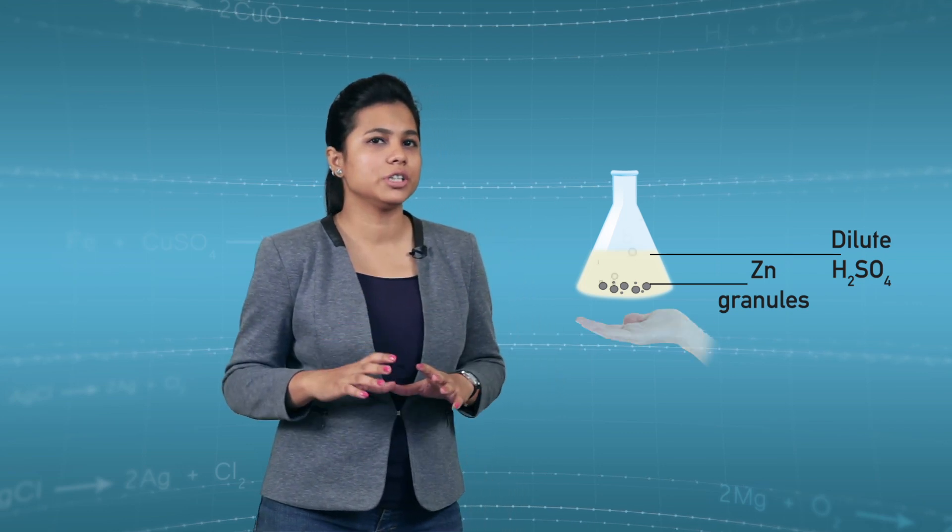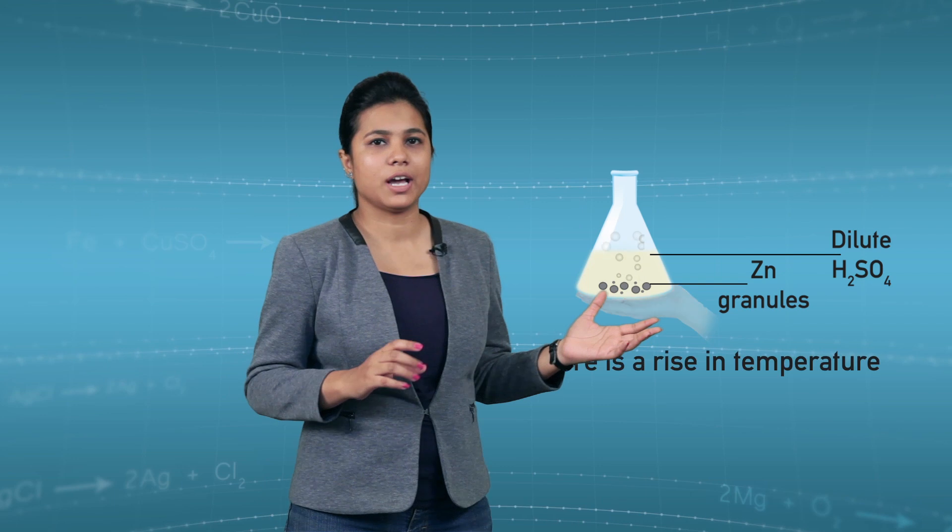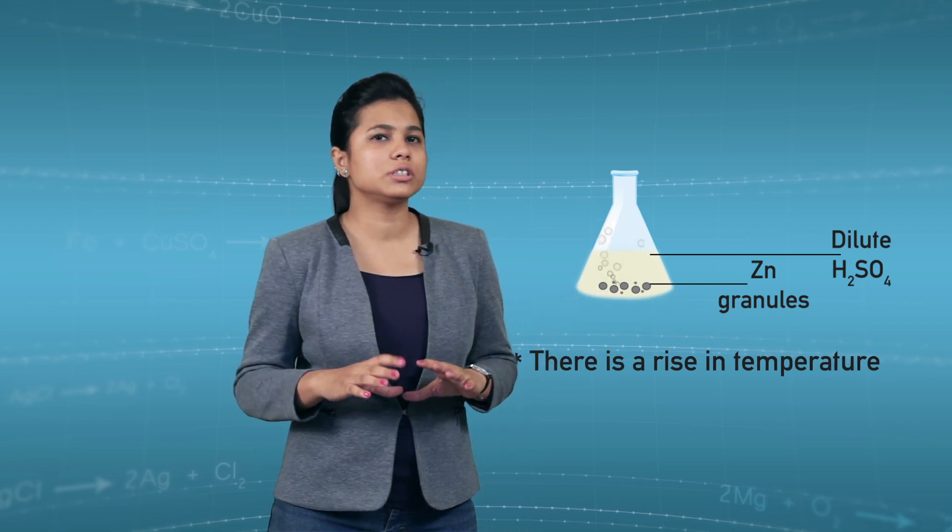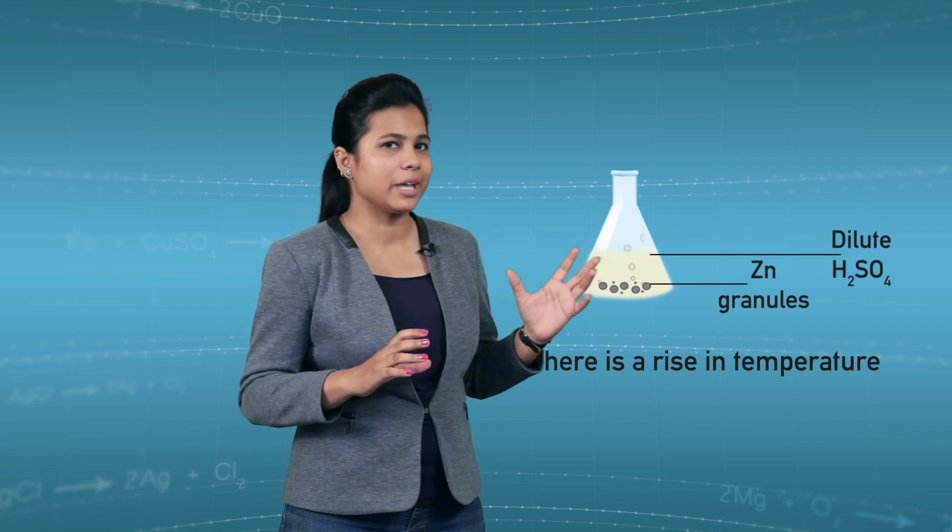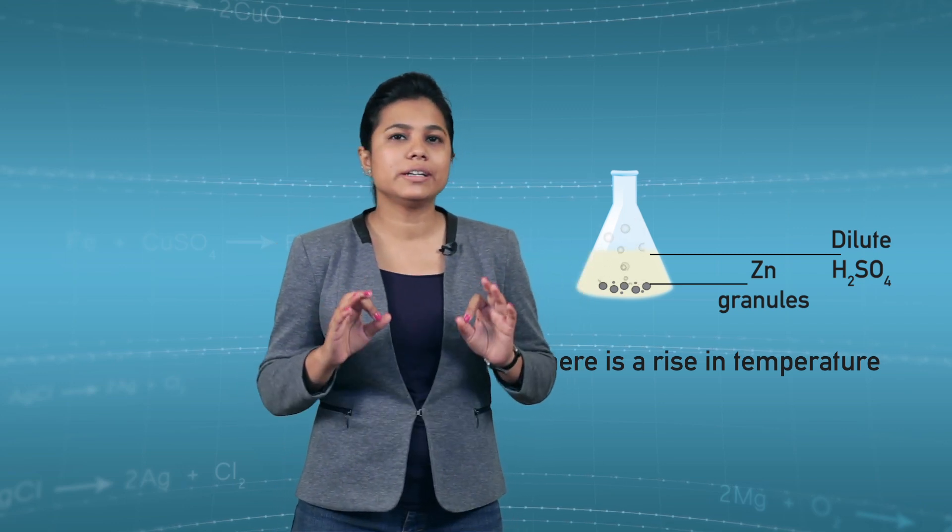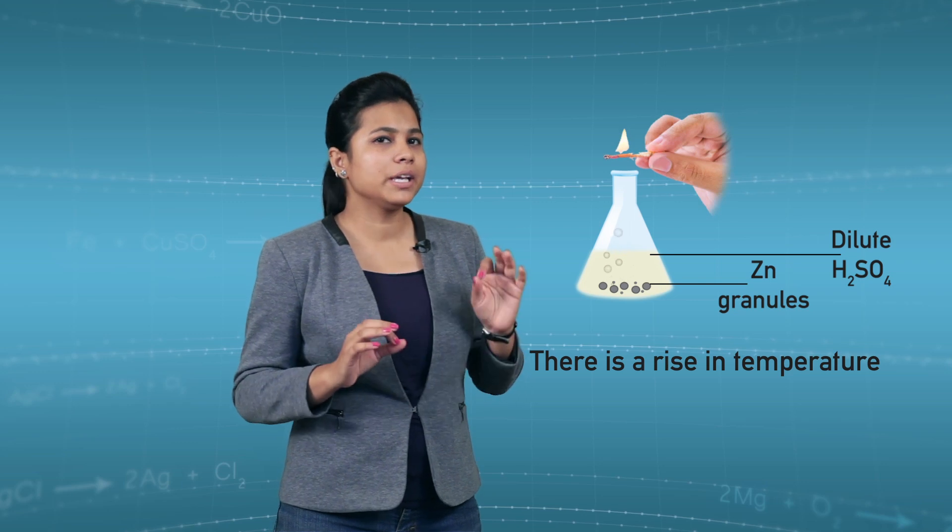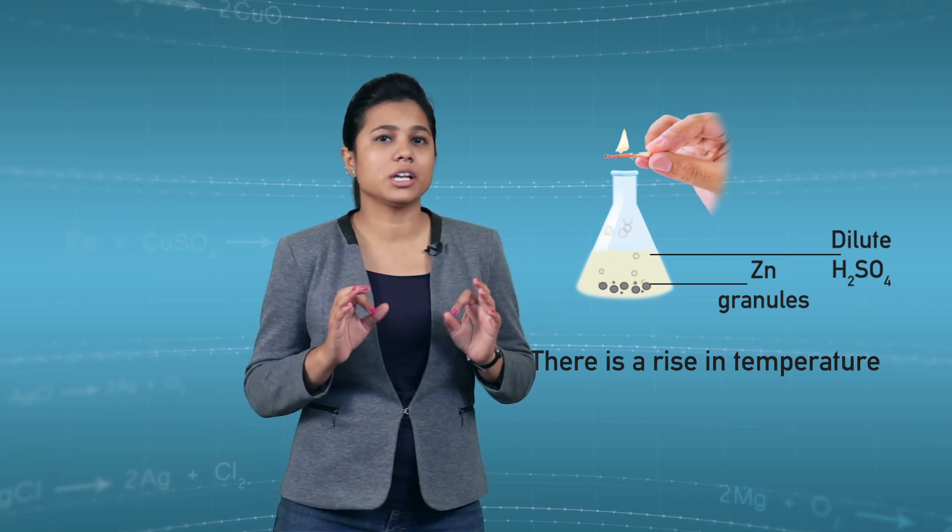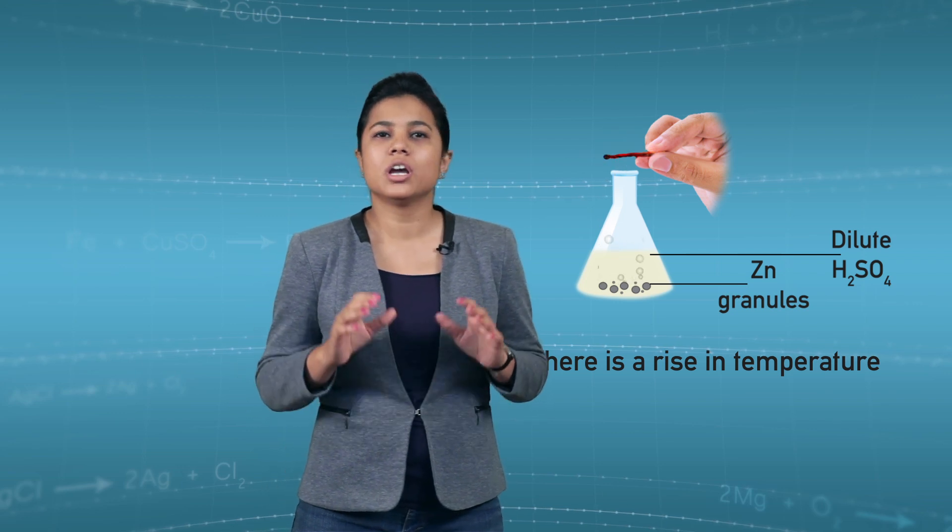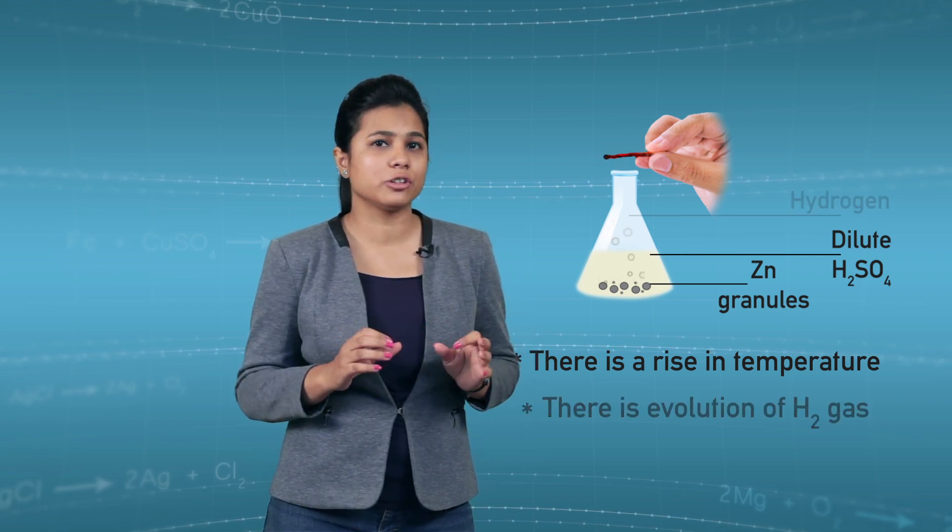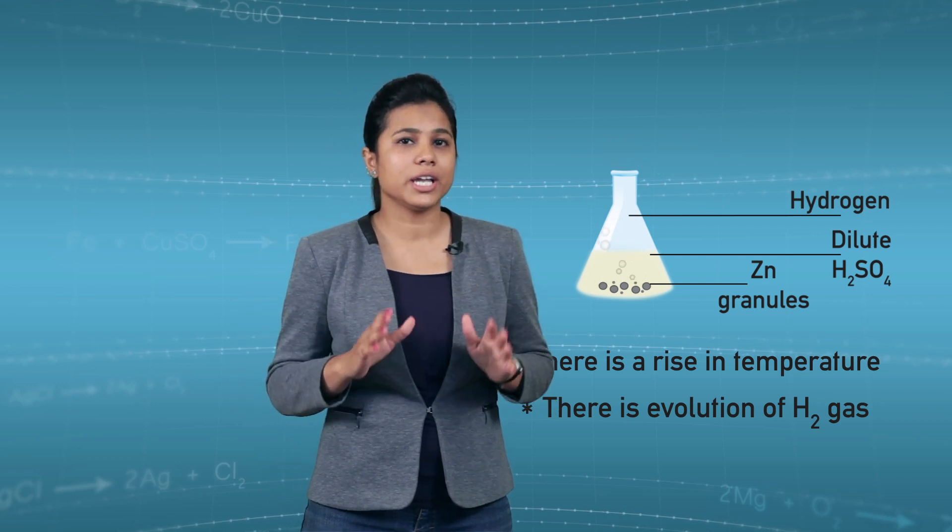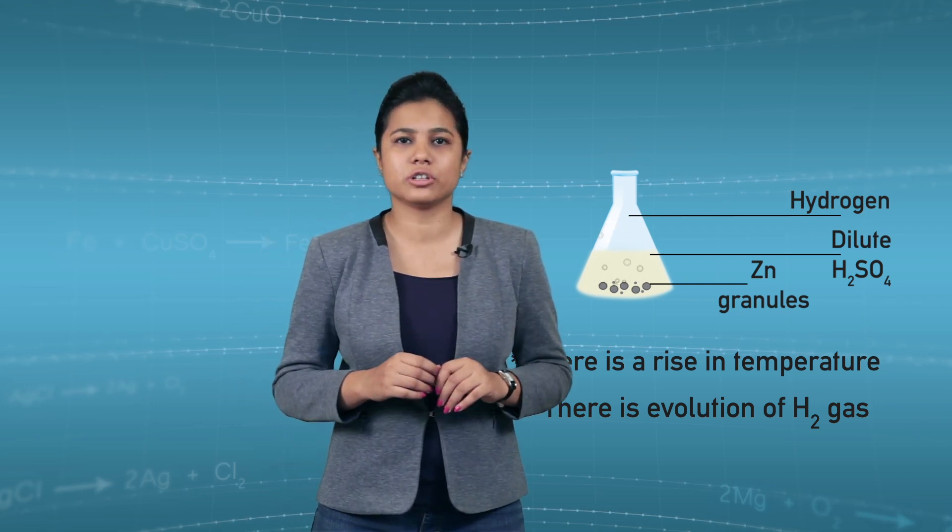When you touch the conical flask it has increased its temperature. You will also see that there are bubbles of some gas. Now how will you test this gas? You can test this gas by bringing a burning matchstick. You will observe that the matchstick extinguishes with a pop sound. This shows that the evolution of hydrogen gas was there. So we can conclude that there is change in temperature and also evolution of gas.